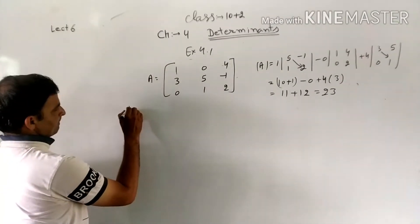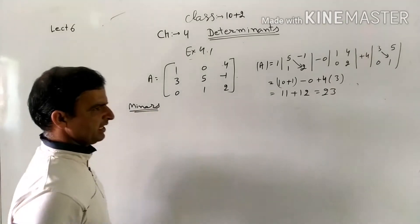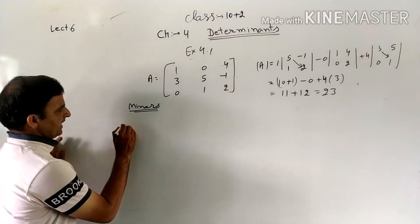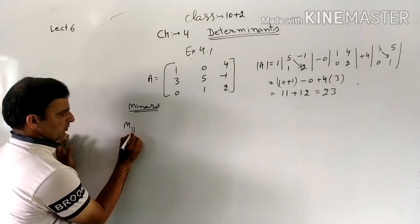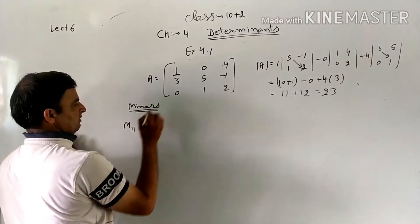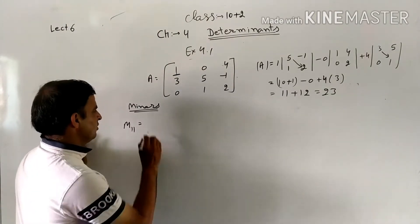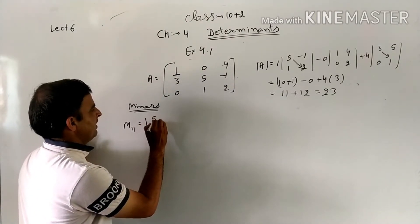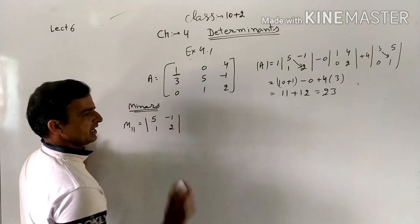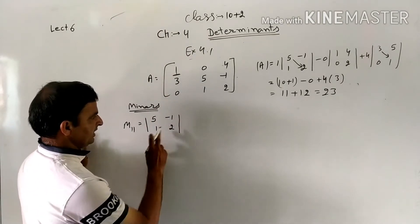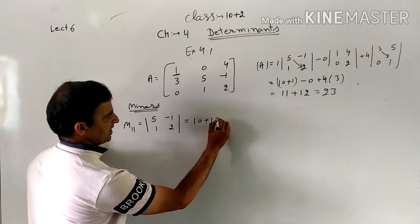Now let us find the minors. Minors are denoted by M. M11 means the element at first row, first column, which is 1. To find its minor, we delete its row and column, leaving [5, -1; 1, 2]. The determinant is 10 - (-1) = 11.